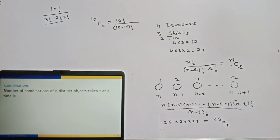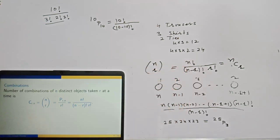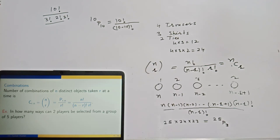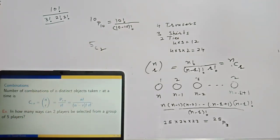The number of combinations of N distinct objects taken R at a time is given by the formula NCR, where R factorial is divided because R objects are alike — they are identical. For example, in how many ways can two players be selected from a group of five players? The answer is 5C2, which equals 10. In permutations, order matters; in combinations, you are selecting a group and order doesn't matter.